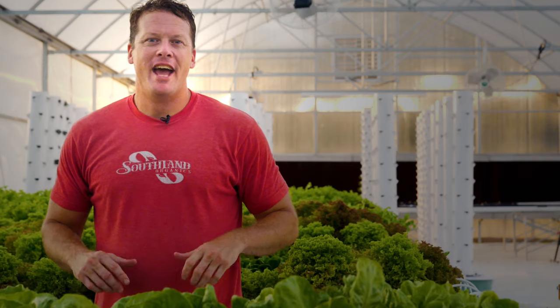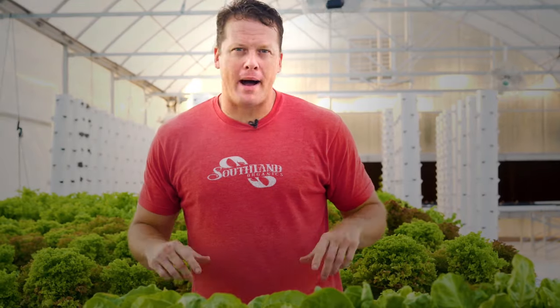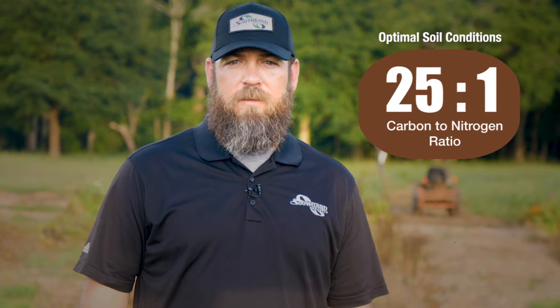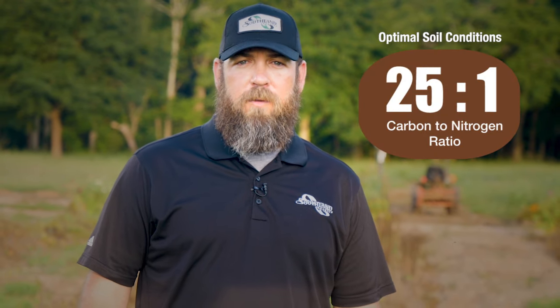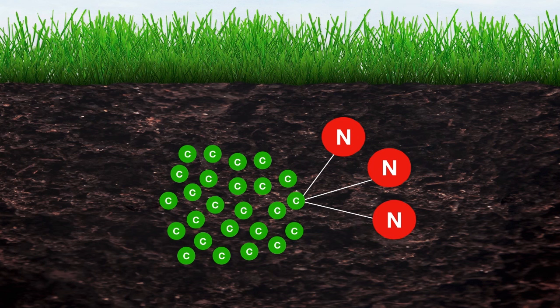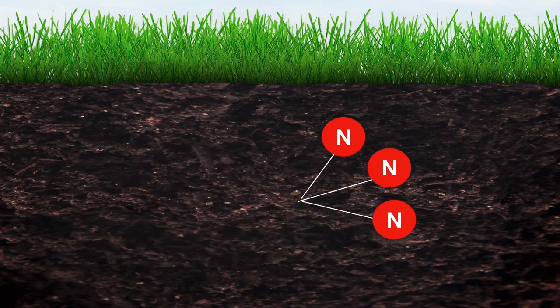In order to do the work of these conversions and transformations, the microbes need fuel — carbon is that fuel, the microbes feed on it. Optimal soil conditions require a proper carbon-to-nitrogen ratio of 25 to 1. If you are applying too much nitrogen, an imbalance will occur in the soil ecosystem where you start burning up the fuel and slowing down the microbes.